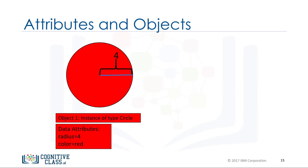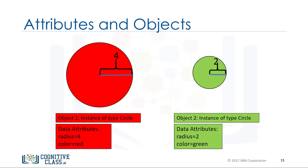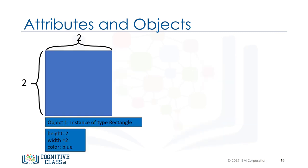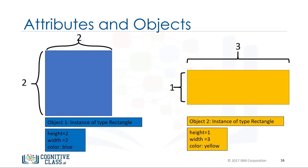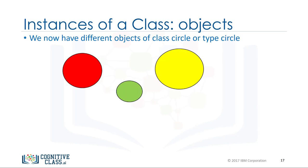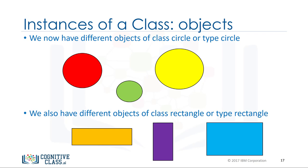We can create an object that is an instance of type circle with color red and radius 4. We can also create a second circle object with color green and radius 2. We can create an object that is an instance of type rectangle with color blue and height and width of 2. A second rectangle object has color yellow, height 1, and width 3. We now have different objects of class circle and different objects of class rectangle.